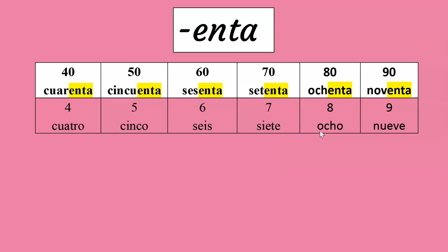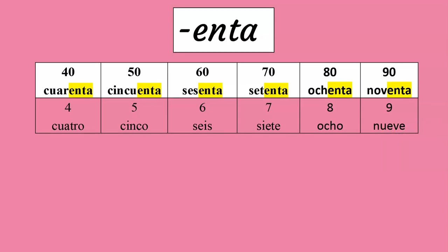80 has OCH — the last O is removed. And 90 has NV — the UE is turned into an O, and the E at the end is joined with the ending.